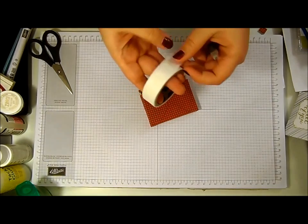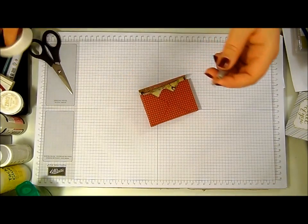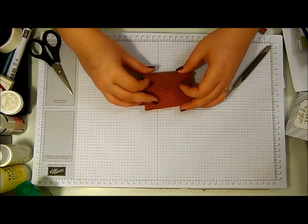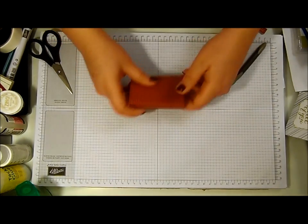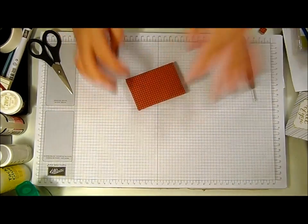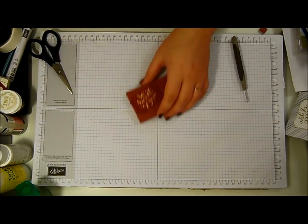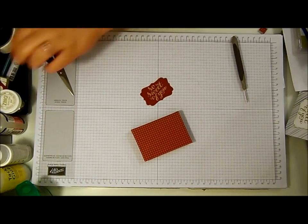And I am actually going to use a glue dot just to keep it closed. So I'll take a glue dot and my paper piercer. I keep a paper piercer just for adhesives. I'm just going to fold that round and pop it down.